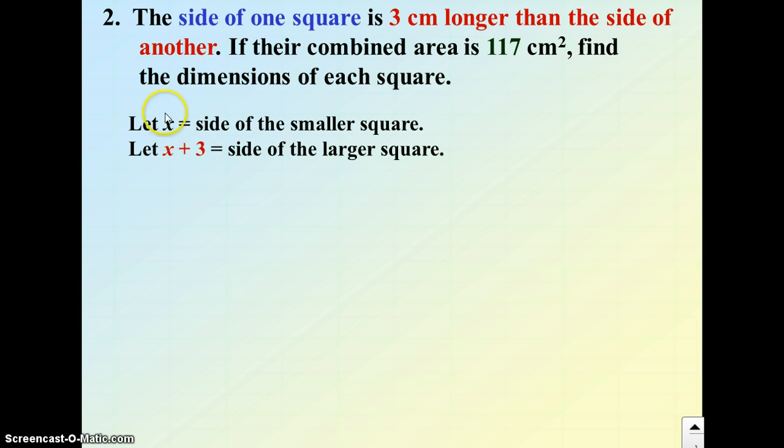So the area of one square is side times side, or x squared. The other side would be x plus 3 all squared for the other area of the square. And then their sum would be 117. So expand out the x plus 3 all squared: x squared plus 6x plus 9. Simplify that and set it equal to 0.